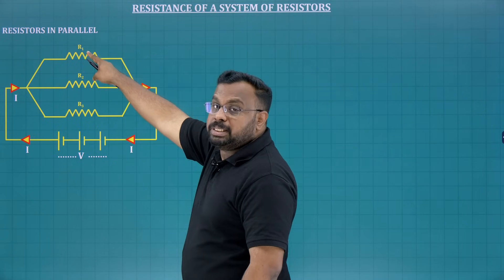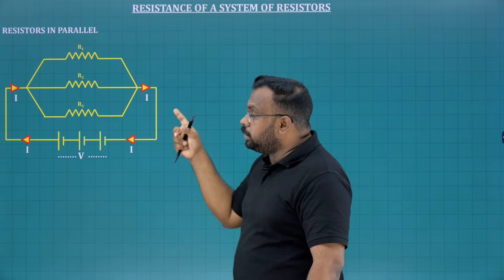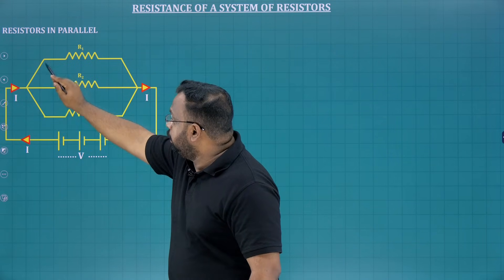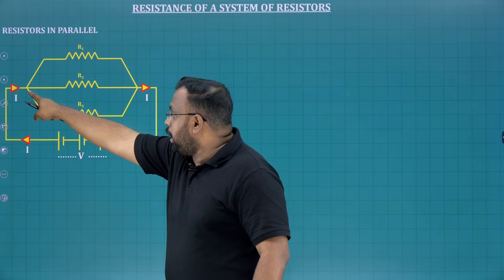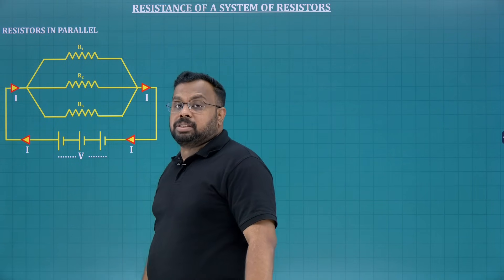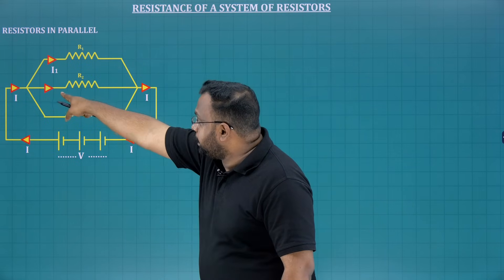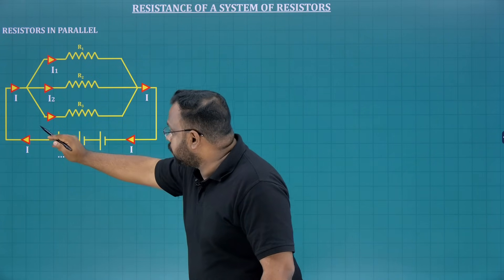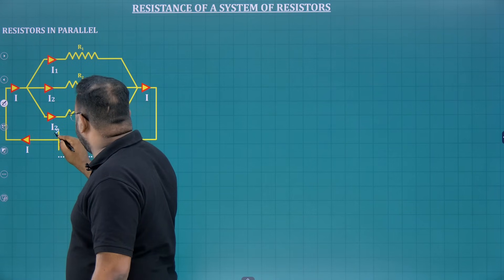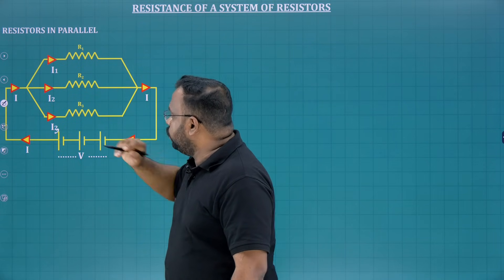Once again: in series combination, current is same; in parallel combination, voltage is same. The voltage across R1 is V, R2 is V, R3 is also V. But since the resistors are different, the current through each resistor will be different. The total current I reaches a junction and there are three paths for it to flow. In series combination there is only one path, so current is same. But here, three different paths mean the current will be different. Let us assume the current through R1 is I1, through the second resistor is I2, and through the third resistor is I3.